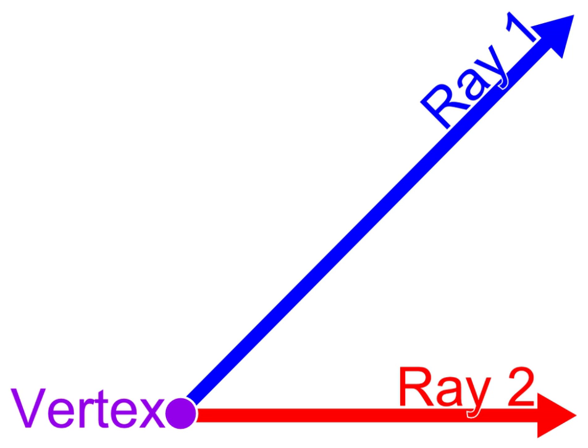Angles that have the same measure are said to be equal or congruent. An angle is defined by its measure and is not dependent upon the lengths of the sides of the angle — e.g. all right angles are equal in measure. Two angles which share terminal sides but differ in size by an integer multiple of a turn are called coterminal angles.